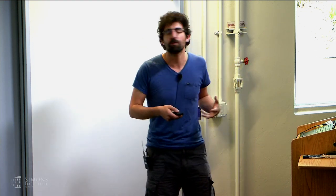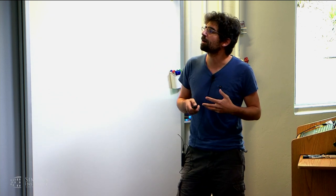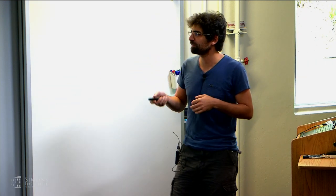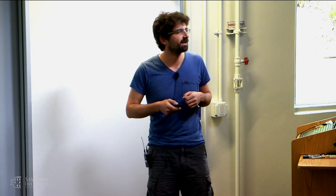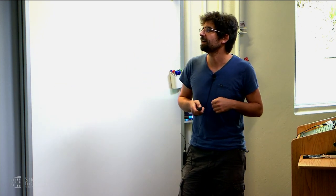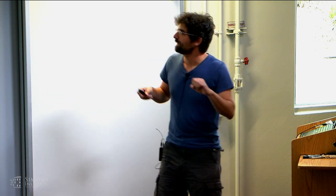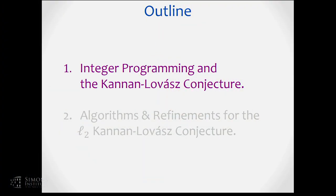The outline of the talk: I'm going to talk first about integer programming, an open question there, how worst-case algorithms for IP work, and its relationship to a conjecture called the Kanan-Lovas conjecture. That will be probably the semi-understandable part. Then we'll move on to the mostly incomprehensible part, which will be about adventures in trying to prove it.